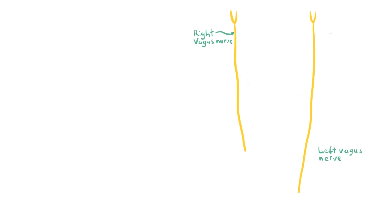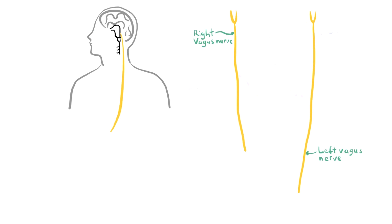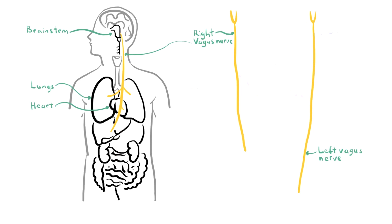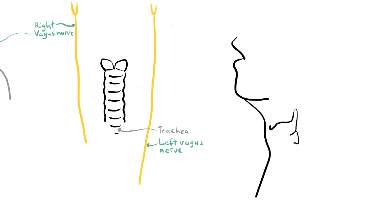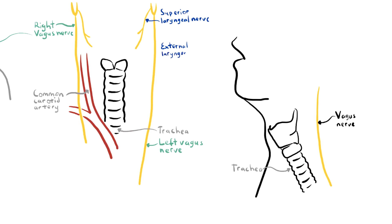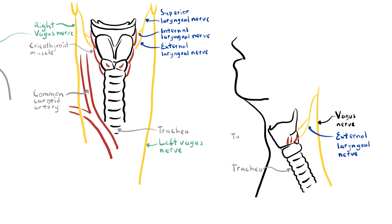The vagus nerve runs a complex course. It exits the brainstem, descends, and innervates many organs including the heart, lungs, and gastrointestinal tract. The right and left vagus nerves descend along the trachea behind the common carotid artery. As the vagus nerve descends it gives off the superior laryngeal nerve, which branches into the external and internal laryngeal nerves. The external laryngeal nerve supplies the cricothyroid muscle, the tuning fork of the larynx, responsible for raising pitch.